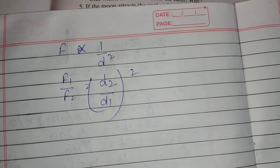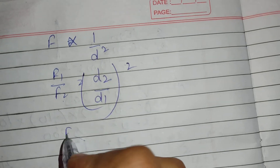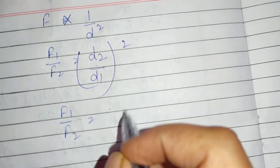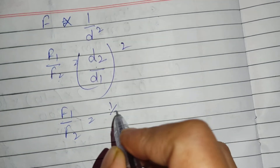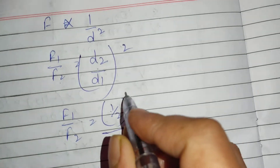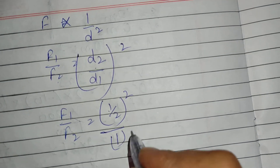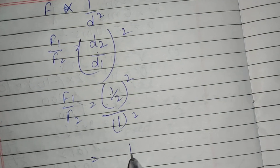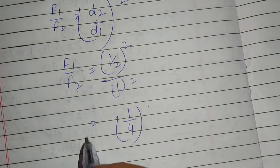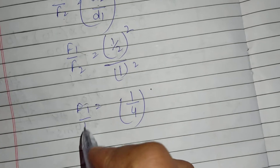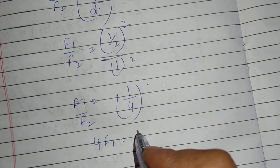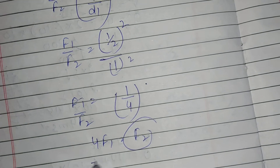We are finding the force of gravitation. We don't know how much force was before. Now D2 has half the distance — one upon two. This gives one upon four. So F1 upon F2 equals one upon four, meaning F2 is equal to 4 times F1.